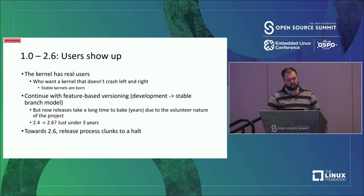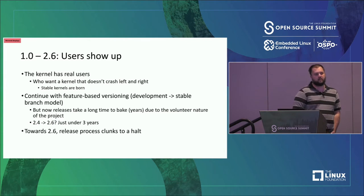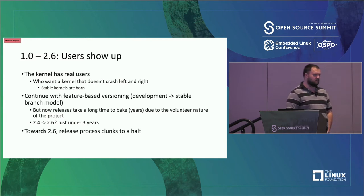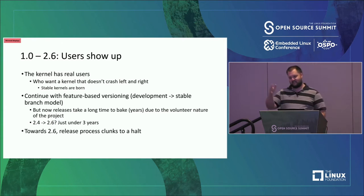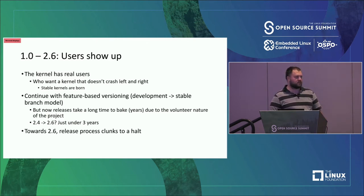The kernel continued its versioning scheme but also introduced the concept of a stable branch. Development would happen on one branch and the stable side on a different branch — so 2.4 would be the development branch and 2.3 the stable branch where fixes would get backported. Development happens on the dev branch and then fixes are backported onto the stable branch.